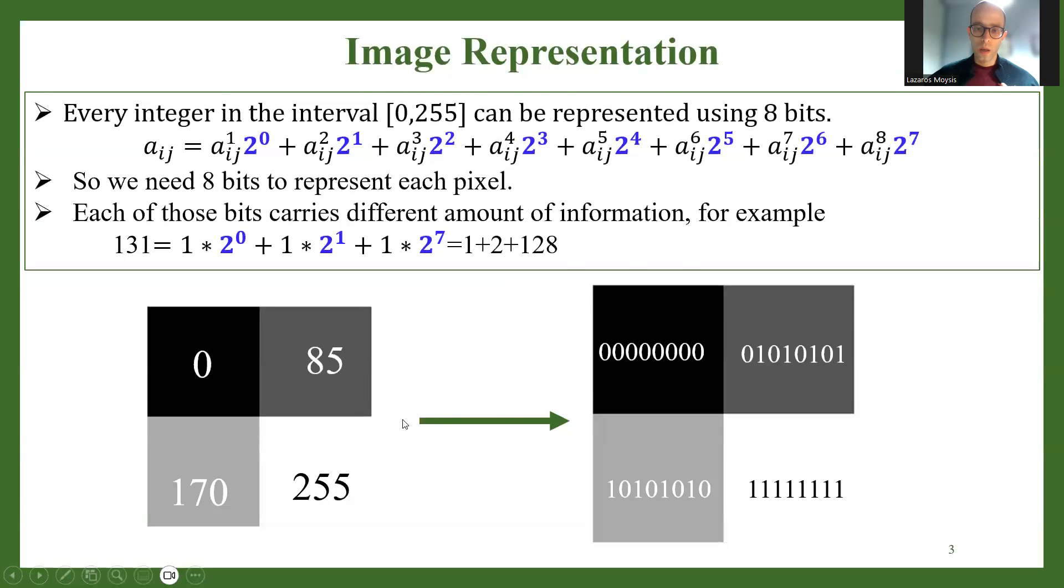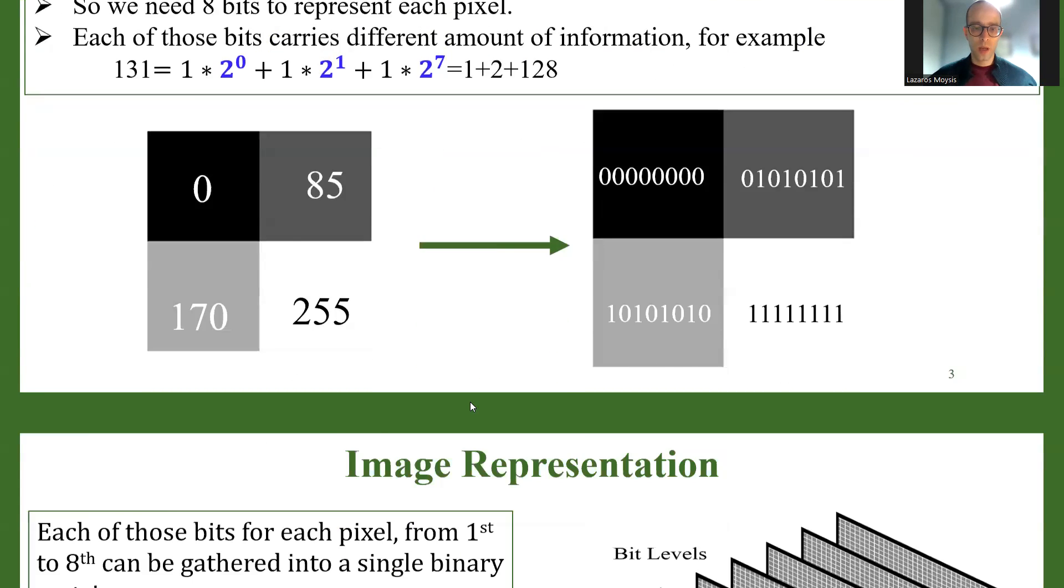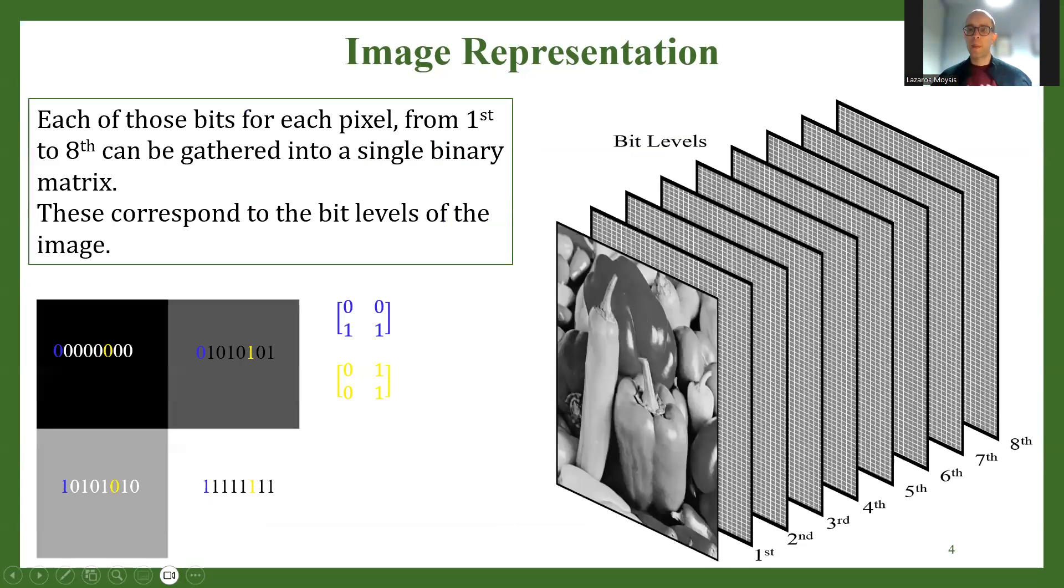From this transformation, we can go on and define the bit planes of the image. How do we do so? It is very easy. Let's say we have a very big image, like the peppers that we see right here. We take each pixel and transform it into its binary representation. If you think about it, this M times N image in integer format becomes a sort of cube that is N by M by 8, because for each pixel now we have 8 bits.